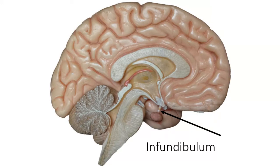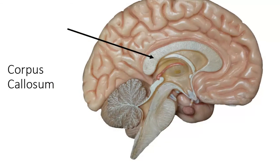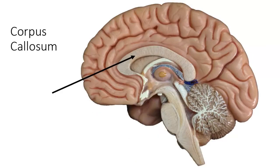In your brain, you have nerve fibers that connect one side of your brain to the other, or the front to the back. The fibers that connect the left and right sides are called commissural fibers. The largest grouping of commissural fibers is called the corpus callosum. This structure allows your right and left cerebral hemispheres to talk to each other.